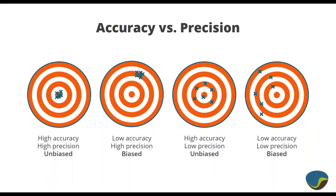A couple of concepts to get us going on this topic today: accuracy versus precision. We're talking about precision — here we have a classic diagram of shots on a target. If there's a very tight spread, that means we have high precision, and if they're all more or less on average over the bullseye, that means we have high accuracy — so unbiased. This first graphic represents high accuracy, high precision.